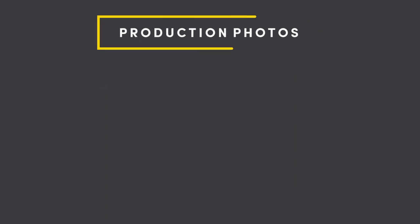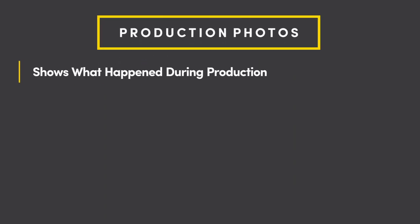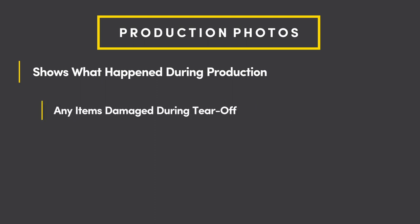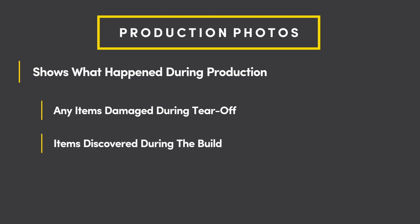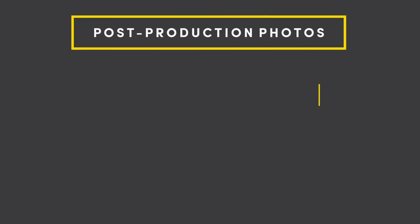The next step is production photos. This is your way of showing what happened during production. It shows any items that are damaged during tear-off, such as flashings, items discovered during the build such as bad sheathing, ice and water shield, or additional layers of shingles. You also want to make sure to capture any code items that you're going to be installing, as adjusters commonly ask for these photos.